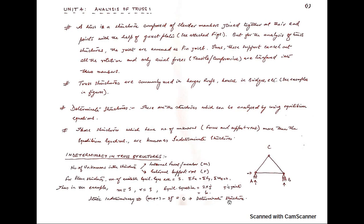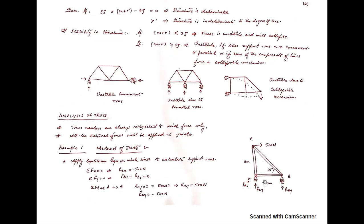If m + r − 2j equals zero, the structure is determinate and can be solved by equilibrium equations. If it is less than zero, the structure can be unstable. If it is greater than zero, it will be indeterminate and requires compatibility equations to find the unknowns. Stability must also be checked — even if the static indeterminacy is zero, a structure can still be unstable.